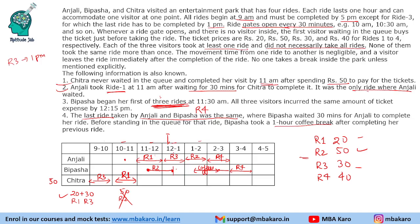Before the coffee break, Vipasha takes one more ride since no other gap is mentioned. The waiting time is from 2.30 to 3, and from 12.30 to 1.30 she needs another ride. It cannot be ride 2 or ride 4 — already taken. It cannot be ride 3 because Anjali is in ride 3 at that time and ride 3 finishes by 1pm anyway. So Vipasha took ride 1 from 12.30 to 1.30pm. This completes the full solution.